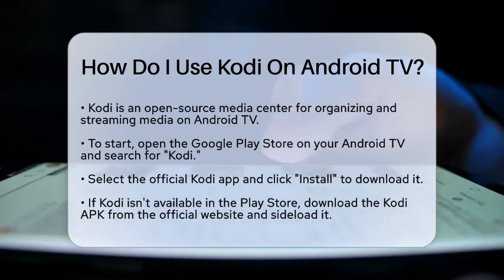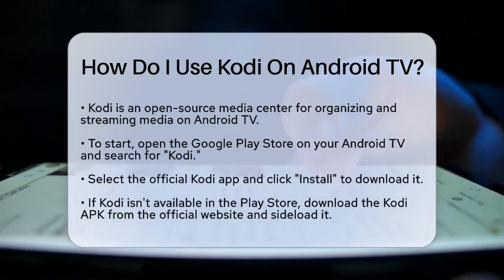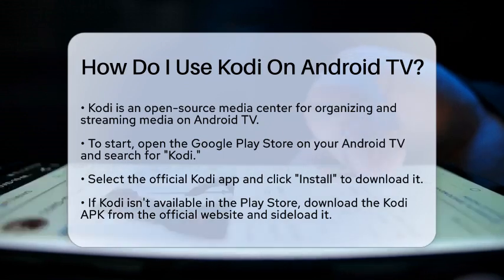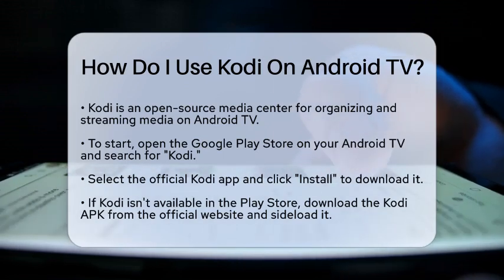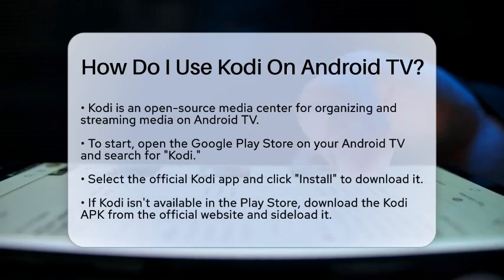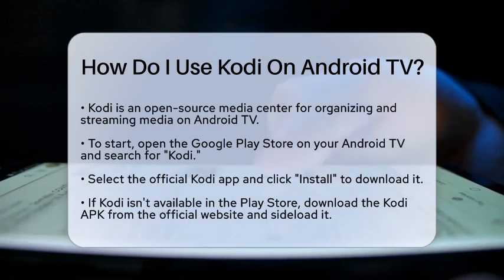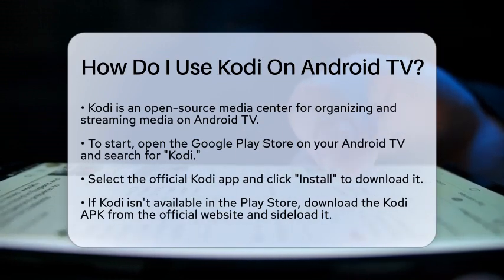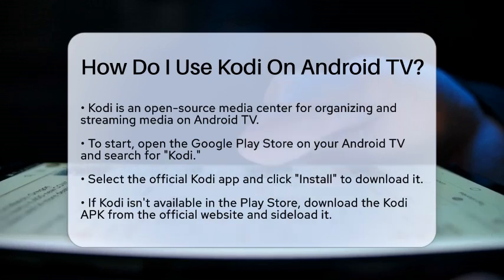First, you need to install the Kodi application. Begin by opening the Google Play Store on your Android television. In the search bar, type Kodi and select the official Kodi application from the results. Click on Install to download and install the app. Once the installation is complete, you can find Kodi in your app list and open it directly from there.